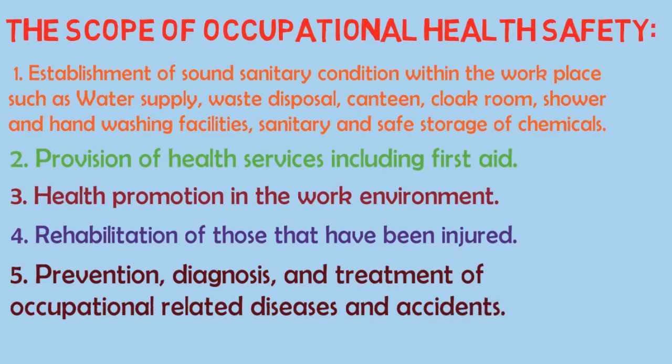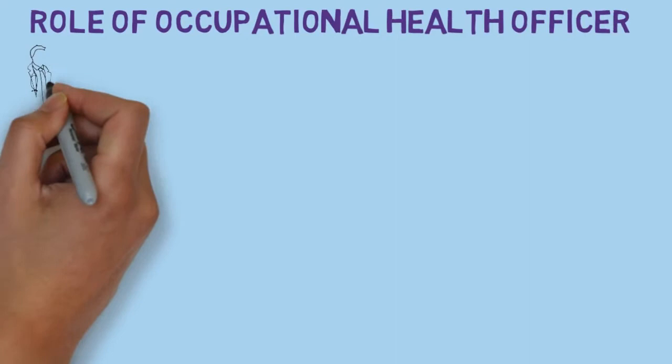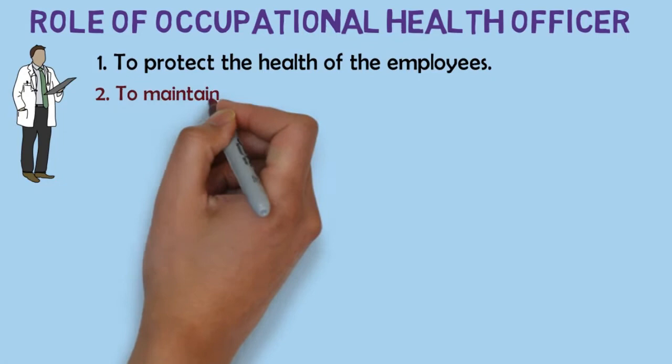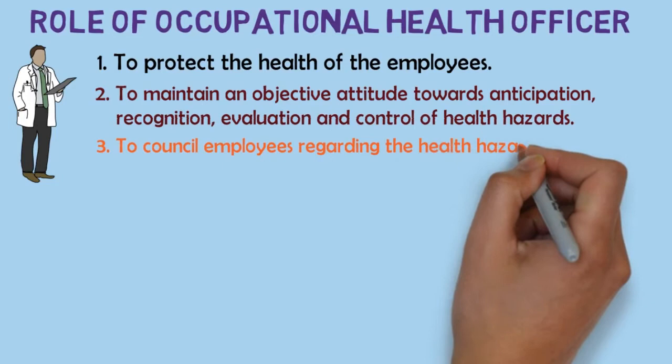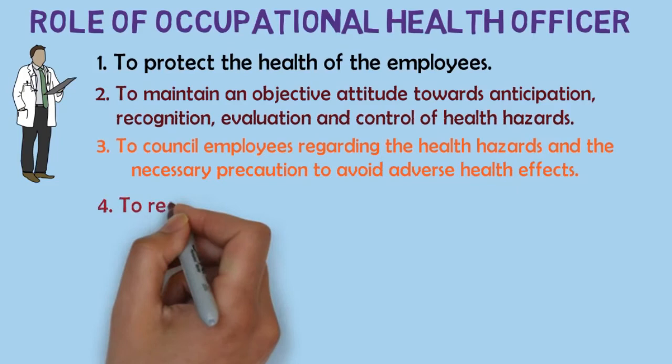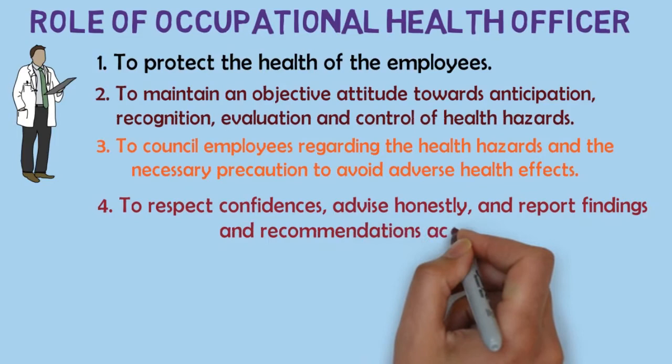The primary responsibilities of the occupational health officer are as follows: to protect the health of the employees; to maintain an objective attitude towards anticipation, recognition, evaluation and control of health hazards; to counsel employees regarding the health hazards and the necessary precautions to avoid adverse health effects; and to respect confidences, advise honestly and report findings and recommendations accurately.